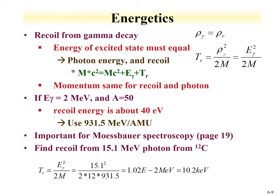Similar to alpha and beta decay, recoil occurs from gamma decay. The recoil energy equals the square of the gamma decay energy divided by twice the mass. This energy is in MeV. As an example, for a 2 MeV photon with A of 50, we can see there's a recoil energy of 40 eV, using our conversion between MeV and AMU.